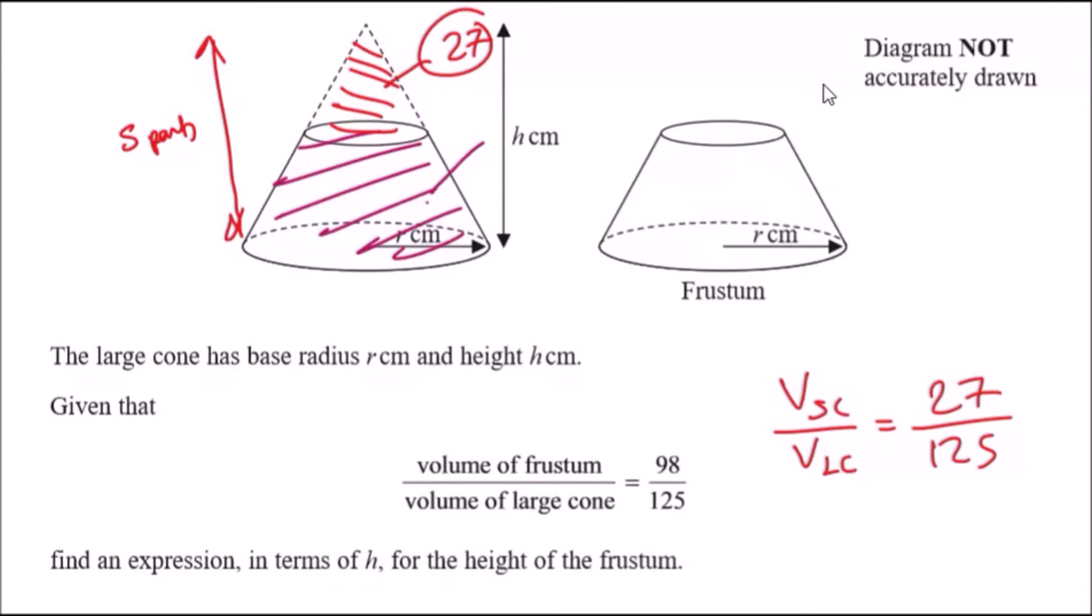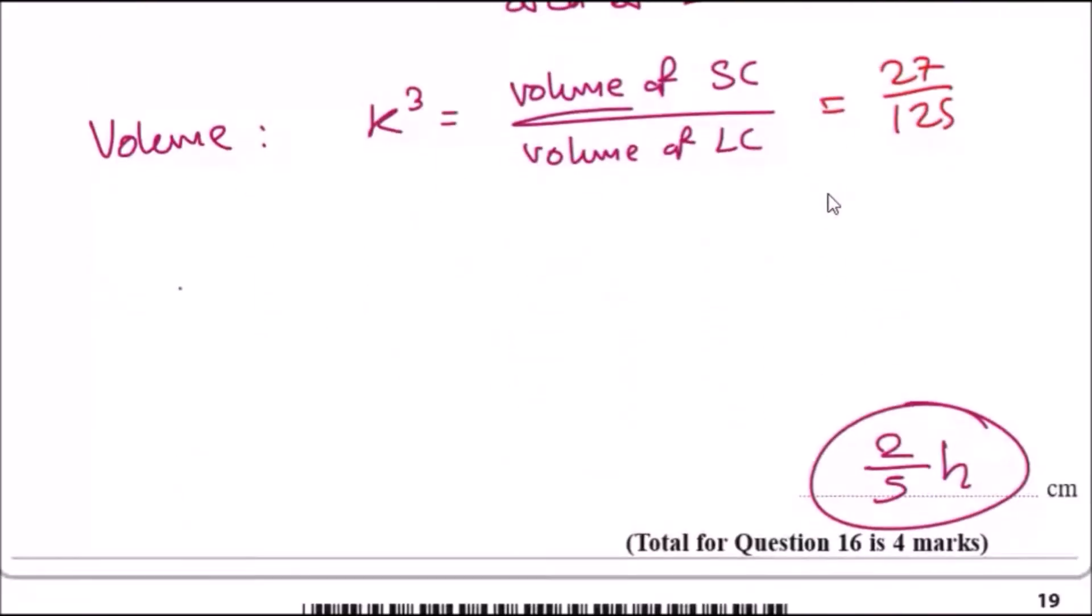This means the frustum, the remainder bit, is 2/5 of h. That's literally it - the answer is 2/5 of h.